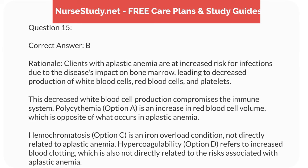Correct answer: B. Rationale: clients with aplastic anemia are at increased risk for infections due to the disease's impact on bone marrow, leading to decreased production of white blood cells, red blood cells, and platelets. This decreased white blood cell production compromises the immune system. Polycythemia, option A, is an increase in red blood cell volume, which is opposite of what occurs in aplastic anemia. Hemochromatosis, option C, is an iron overload condition, not directly related to aplastic anemia. Hypercoagulability, option D, refers to increased blood clotting, which is also not directly related to the risks associated with aplastic anemia.